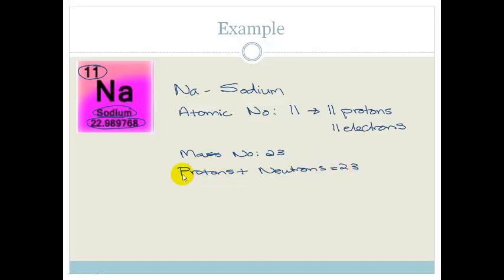So do you agree that since we've got 11 protons, we can find out the number of neutrons we have within this little equation. And we can see that the number of neutrons we have is 12. So that is all the information we can get from the periodic table.